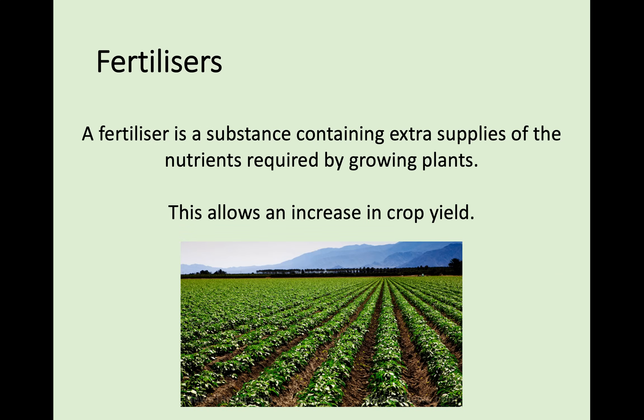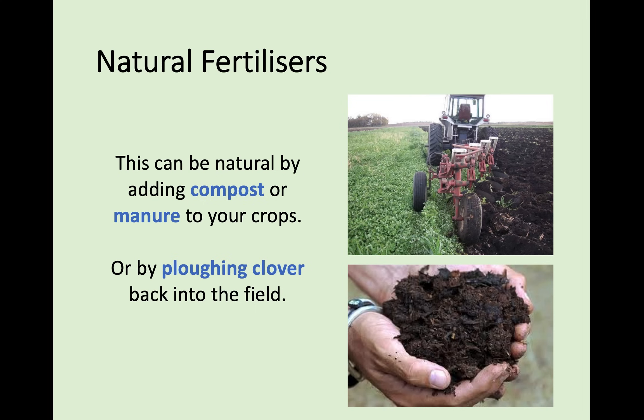Moving on to fertilisers — these are substances, either natural or artificial, that contain extra supplies of nutrients required by plants, giving them a boost to increase growth and crop yield. Naturally, this can be done by adding compost or manure, or by plowing clover into the field. Clover is very high in nitrogen, so allowing a field to grow clover then plowing it back in puts nitrogen back into the soil before a new crop cycle.